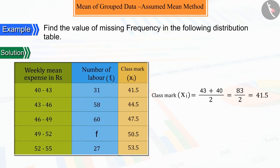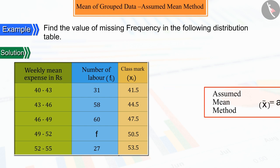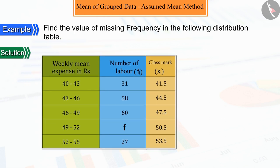As you know, to make the calculation easier, we choose the assumed mean method. On that basis, we need an assumed mean here, which we choose from xi. Suppose here, the assumed mean, that is a, is equal to 47.5.